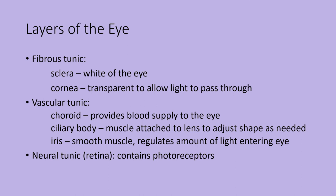The iris is a smooth muscle that regulates the amount of light entering the eye. In the middle of the iris is an opening called the pupil — the black of your eye — where light enters. The color of the iris is determined genetically. Eye color can change in the first couple months after birth and is usually established by six months of age. In front of the pupil is the cornea. The innermost layer is the neural tunic, also known as the retina, which is where the photoreceptors are.